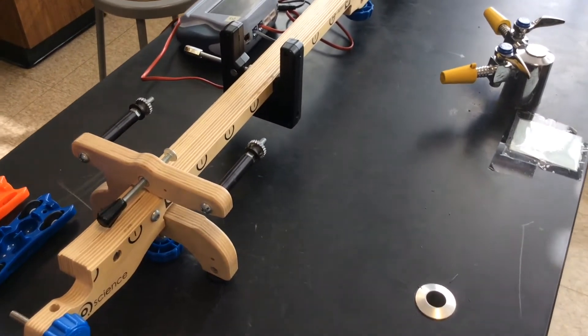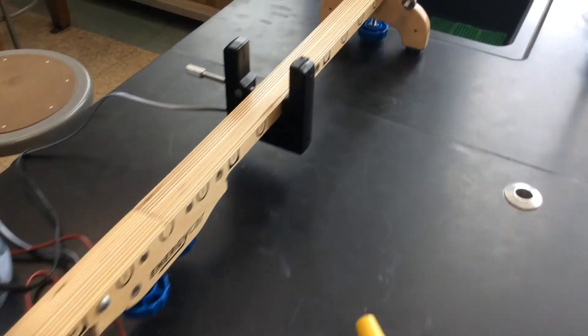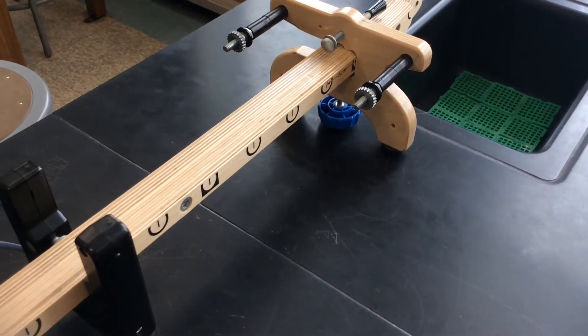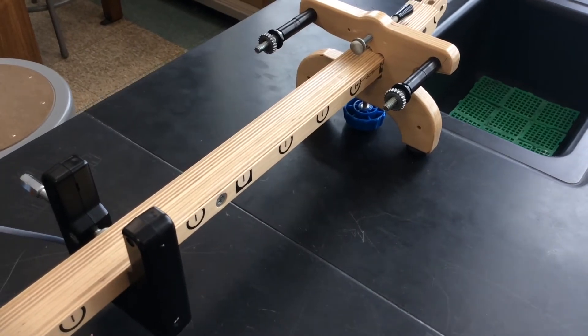Next thing you're going to do is at the far end, you're going to put a little piece of clay that's there to stop the car. If you have a partner who's going to catch the car, that works fine also.